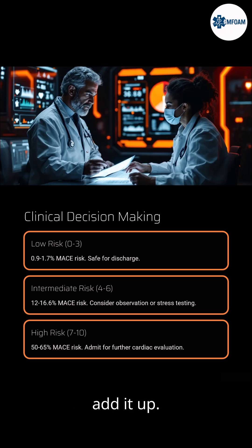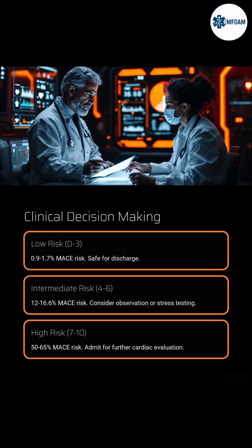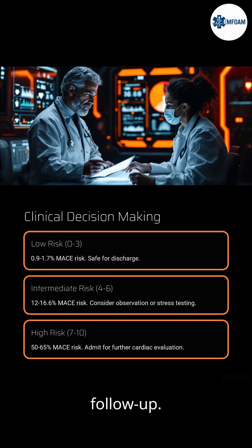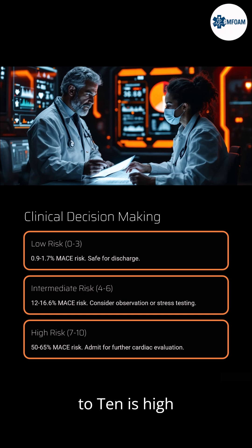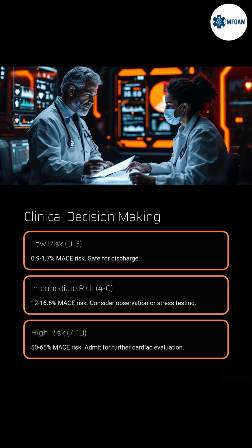Now add it up. A score of 0 to 3 is low risk — consider safe discharge with outpatient follow-up. A score of 4 to 6 is intermediate risk — consider observation or stress testing. A score of 7 to 10 is high risk — admit and evaluate for ACS.